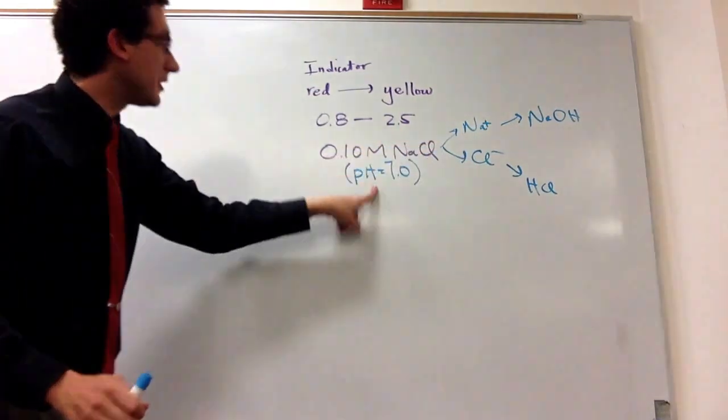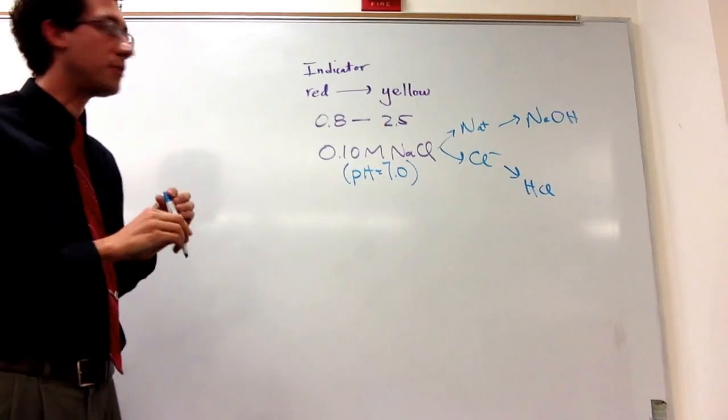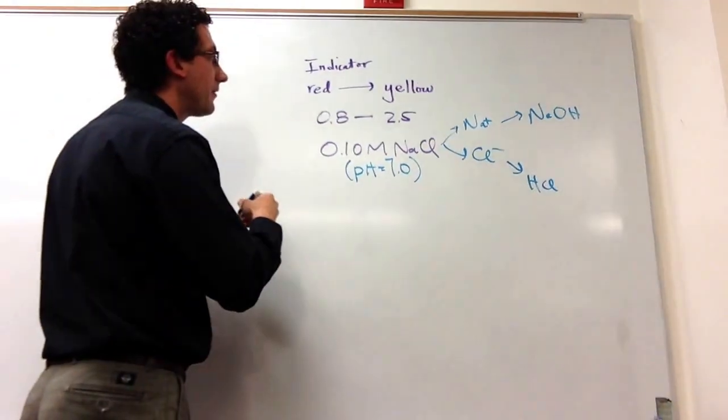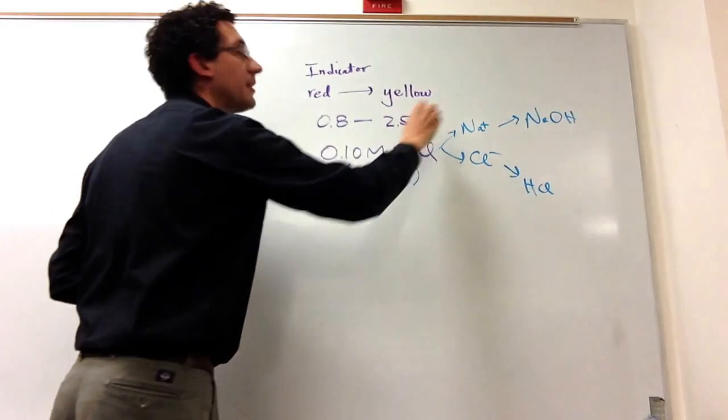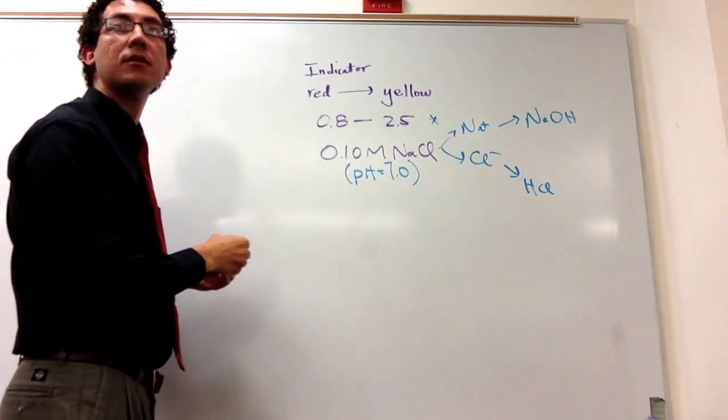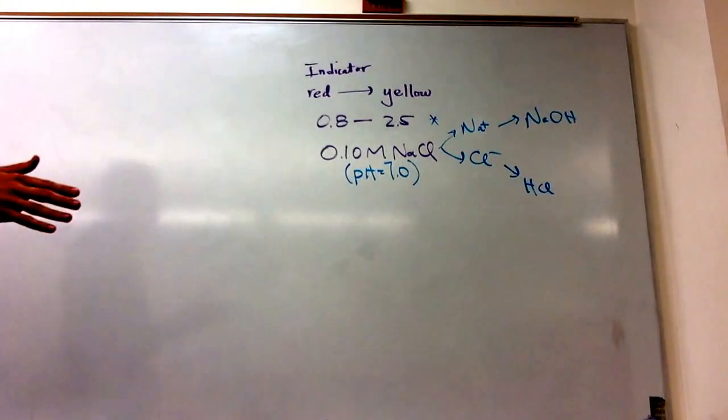So this has to be pH 7. So you'd have to get to neutral ultimately, a neutral compound. All right, so we're at pH 7, so we're way over here on the range on the right-hand side, so it should be yellow. So it's turning from red to yellow as you go through that range.